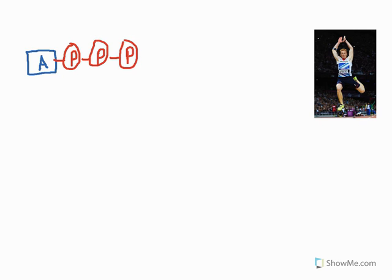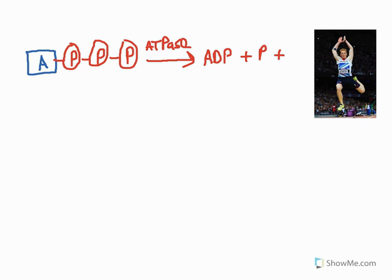Our PC system begins with the high-energy compound ATP. We've already described that ATP breaks down in the presence of ATPase to form ADP — adenosine diphosphate — plus P, plus, most importantly, energy. And it's that energy which we use to power movement.